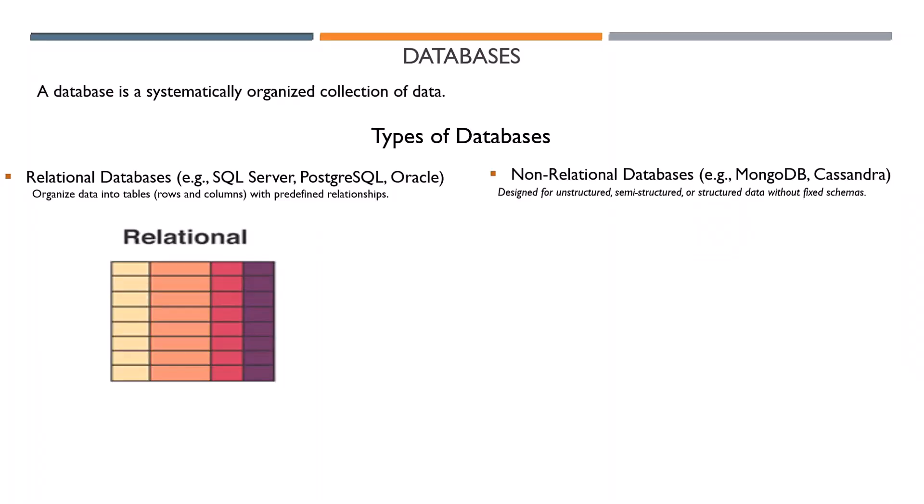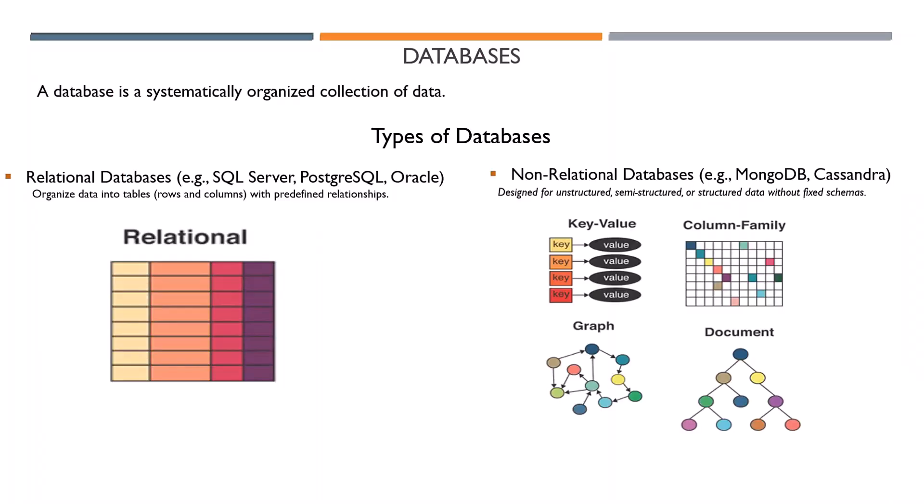Another type is non-relational databases, which are designed for unstructured, semi-structured, and structured data without a fixed schema. They store data as key-value pairs, graphs, documents, or other formats — like where you keep pictures, videos, and documents not structured in rows and columns. Examples include MongoDB and Cassandra.